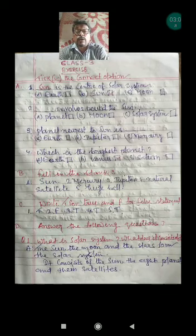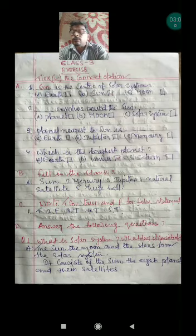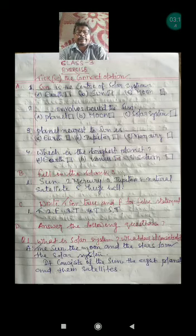Let's see: What is the solar system and what does it consist of? What will be the answer? The Sun, the Moon, and the Stars form the Solar System.